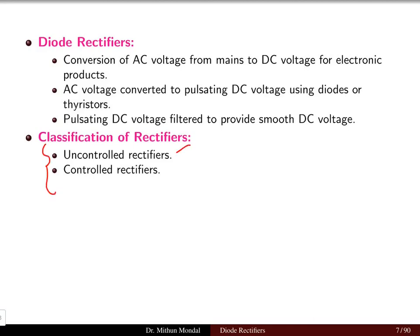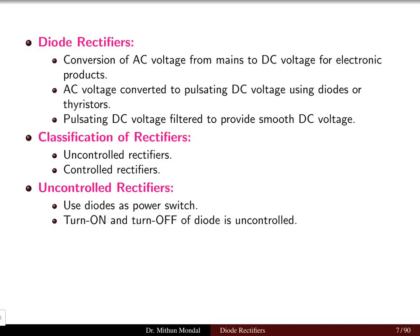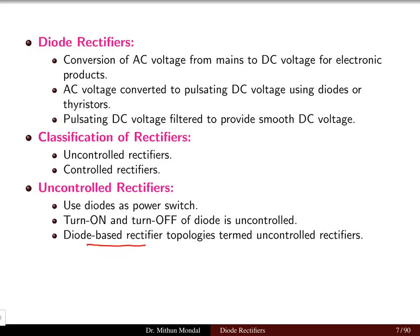Rectifier classification is of two types: uncontrolled and controlled rectifiers. If we use diodes, it is an uncontrolled rectifier; if we use thyristors, it is a controlled rectifier. In uncontrolled rectifiers, diodes are used as power switches and their turn on and turn off is an automatic process — when the input voltage exceeds the diode breakdown voltage it is forward biased and turns on; reverse biased, it turns off.